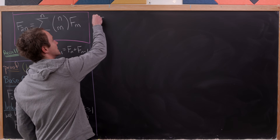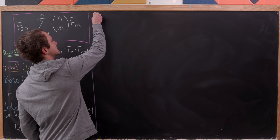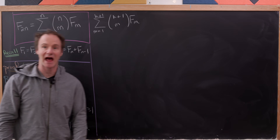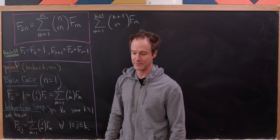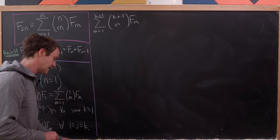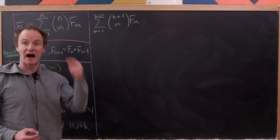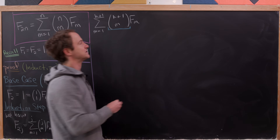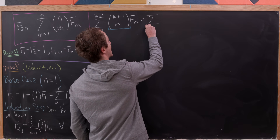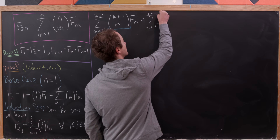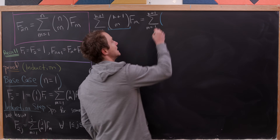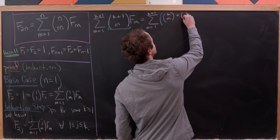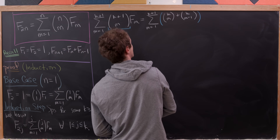So let's start with the sum as m goes from 1 to k+1 of k+1 choose m times f sub m — that's going to be the k+1st case. The first thing I'm going to do is apply the defining recursion for binomial coefficients, so this equals the sum as m goes from 1 to k+1 of (k choose m plus k choose m-1) times f sub m.